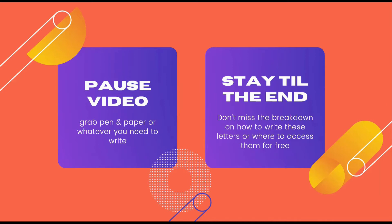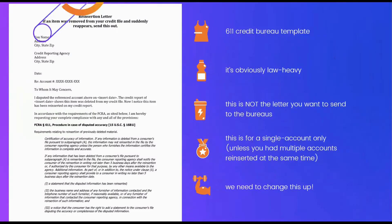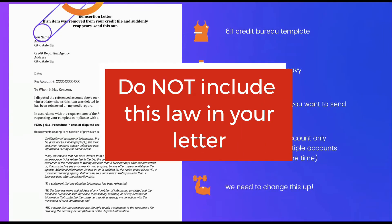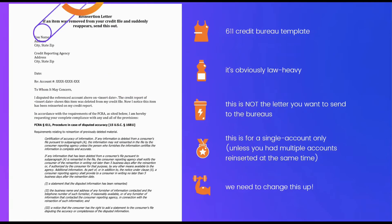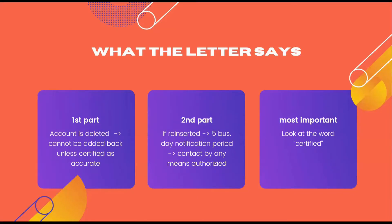If you take a look at your screen, you'll see the dispute letter template that would be sent to the credit bureaus. However, I don't like templates, so we're going to change this up a little bit and write our own. The first section basically says that once a negative item is deleted from your credit report, it cannot be put back on unless the creditor or collector certifies the information is complete and accurate.